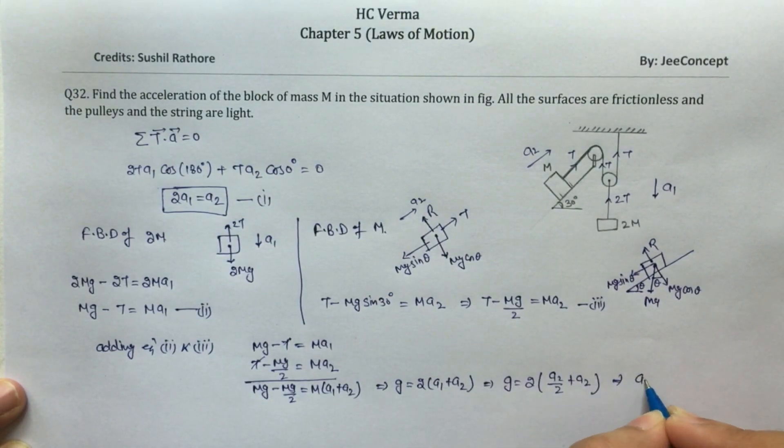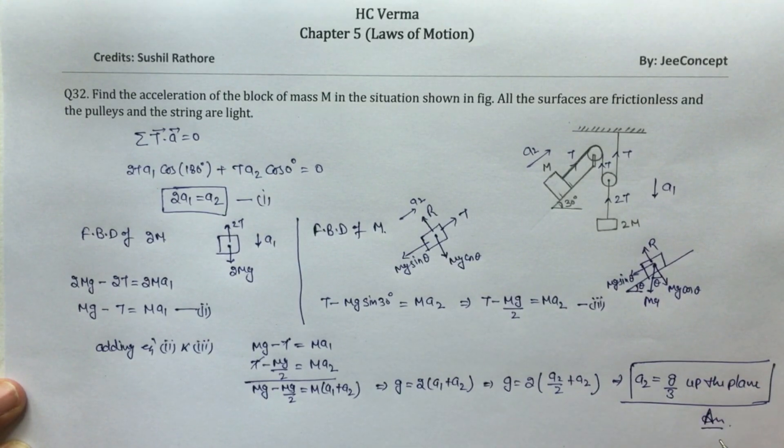So that means a2 equals g by 3 up the plane. This is the solution of this problem.